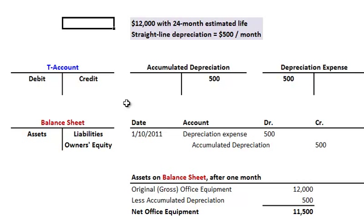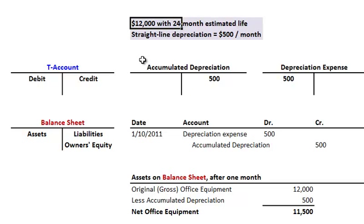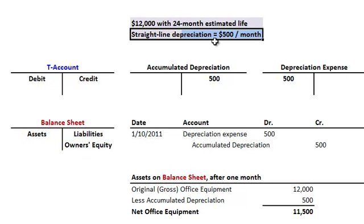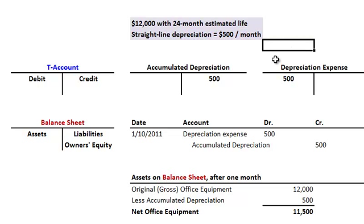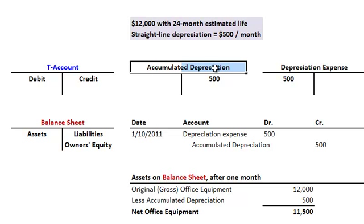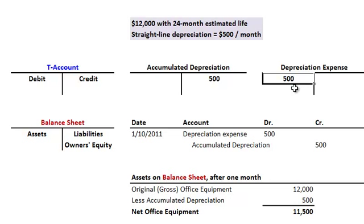Now remember, we're using an accrual system here, so cash may or may not be involved. Let's assume the equipment we purchased has a 24-month useful life. Going forward one month, we have $12,000 in equipment with a 24-month life. Depreciated straight-line, the depreciation expense would be $12,000 divided by 24, or $500 per month. So in the first month, accumulated depreciation — a contra asset account — would be credited $500, and depreciation expense would be debited $500.